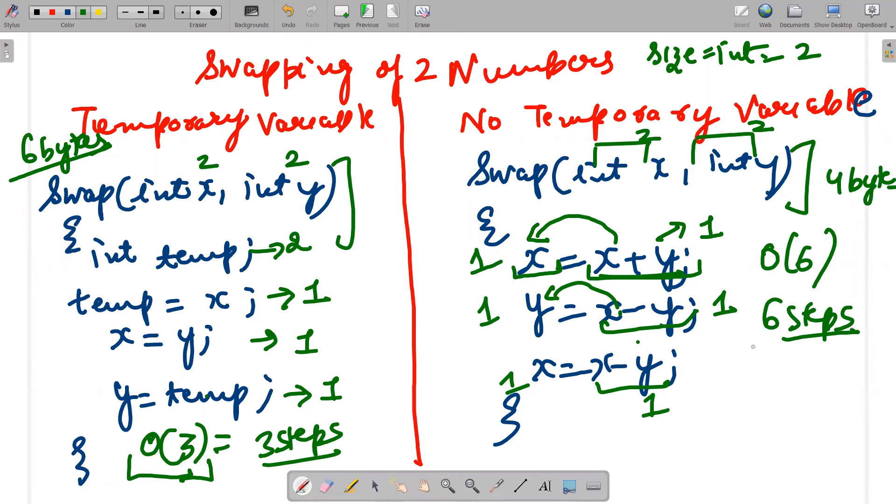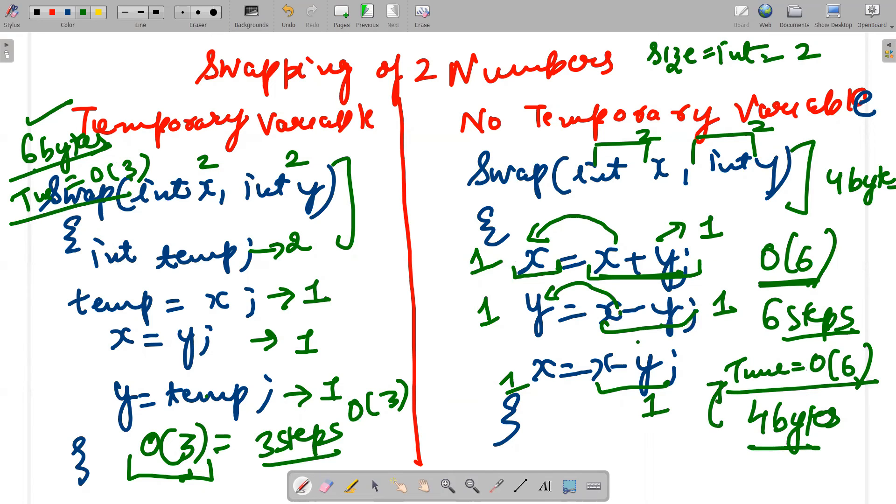And over here it means technically we performed six steps. So six units of time, so time complexity of that is order of six. And over here time complexity is order of three. I'm not taking the declaration part in consideration. So guys, it's very simple that it is taking six units of time as space it is covering four bytes. It is taking six bytes of memory but as time it is taking order of three. So again, if space is more, time is less. If space is less, time is more. So we would definitely prefer this algorithm. Why? Because as a time complexity that is taking less units of time.